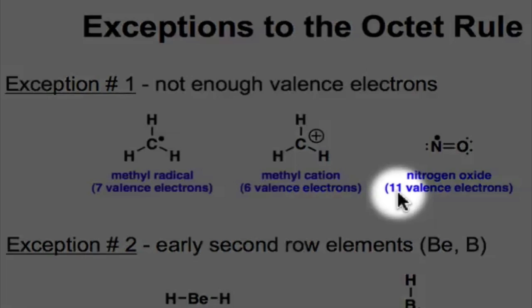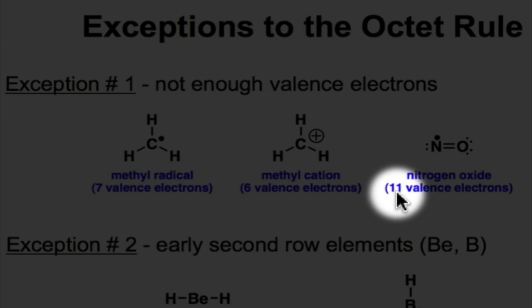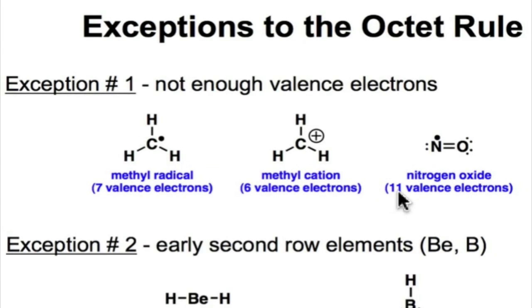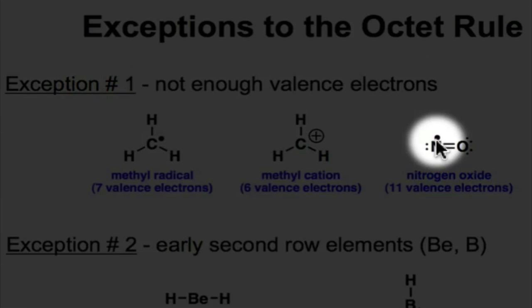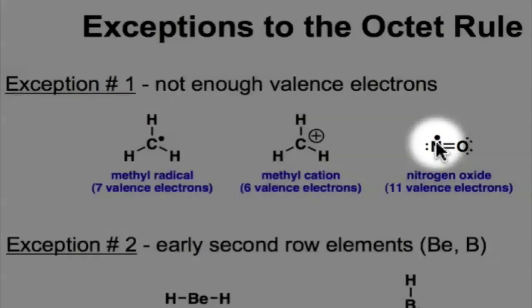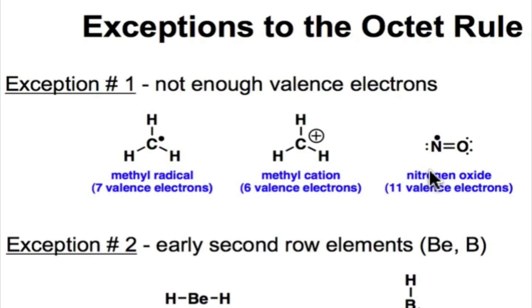The same thing takes place in this nitrogen oxide molecule. An odd number of electrons means that there's going to be a single electron, an unpaired electron, that's going to be present somewhere in the molecule.